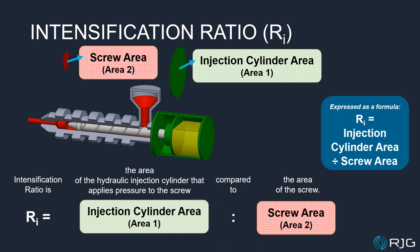So there's the formula. A common question: how do I find the screw diameter and injection cylinder diameter to calculate the ratio? The screw size should be relatively easy to find — it's usually stamped on a plaque on the injection unit, and you likely have spare screws in your maintenance crib since they're a wear item. The injection cylinder diameter, however, can be very difficult to find. It might be in your machine manual, or it might not.